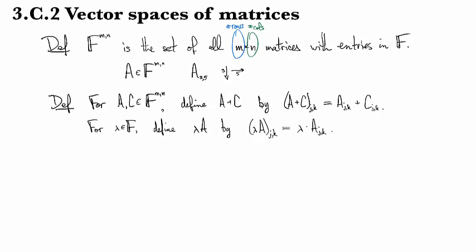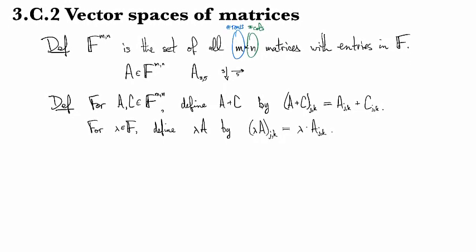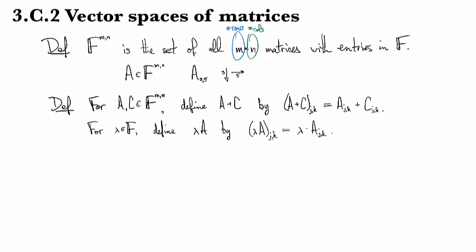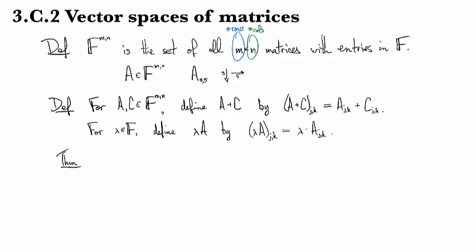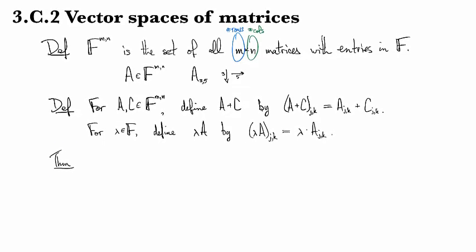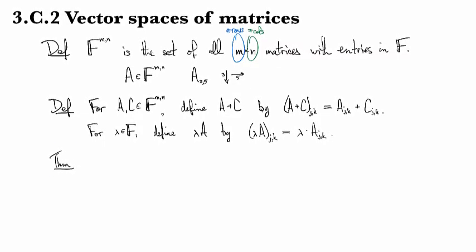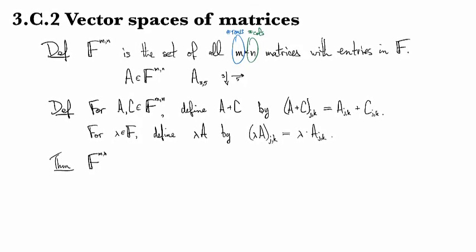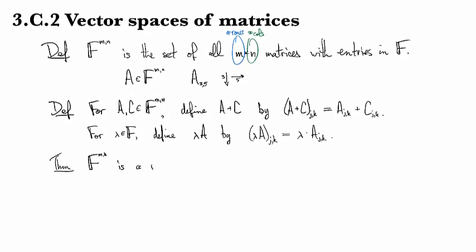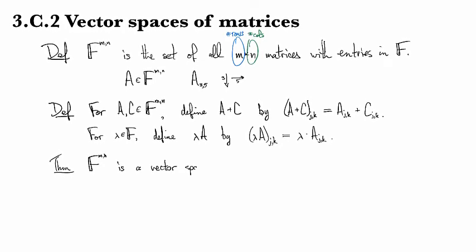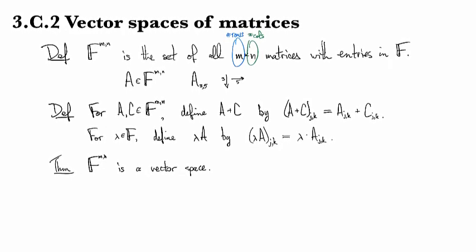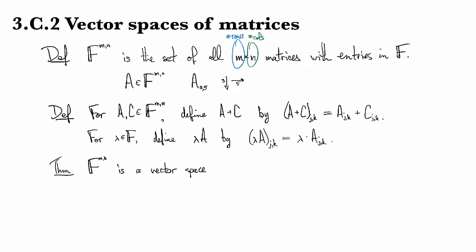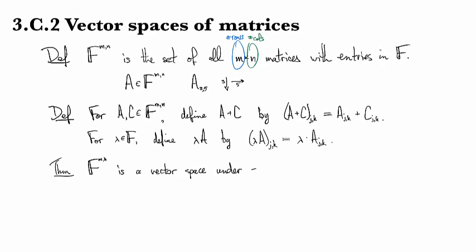So whatever happens in one coordinate has nothing to do with whatever happens in another coordinate. And then it comes as a surprise to absolutely no one that, in fact, with these operations, F to the M N is a vector space. Let me just specify under these operations.